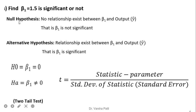Now we start with the null hypothesis and alternative hypothesis. The null hypothesis states that no relationship exists between beta 1 and the output, meaning beta 1 is not significant — formally, beta 1 equals 0. The alternative hypothesis states that a relationship exists between beta 1 and the output, meaning beta 1 is significant — formally, beta 1 is not equal to 0. Since it is not equal to 0, it becomes a two-tailed test.